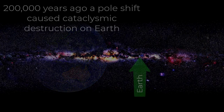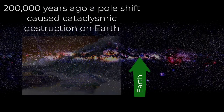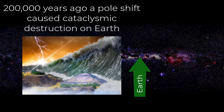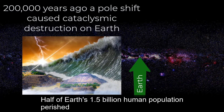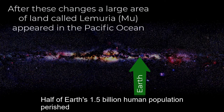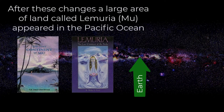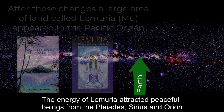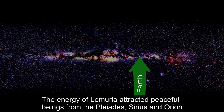200,000 years ago, a pole shift caused cataclysmic destruction on Earth. Half of Earth's 1.5 billion human population perished. After these changes, a large area of land called Lemuria or Mu appeared in the Pacific Ocean. The energy of Lemuria attracted peaceful beings from the Pleiades, Sirius and Orion.